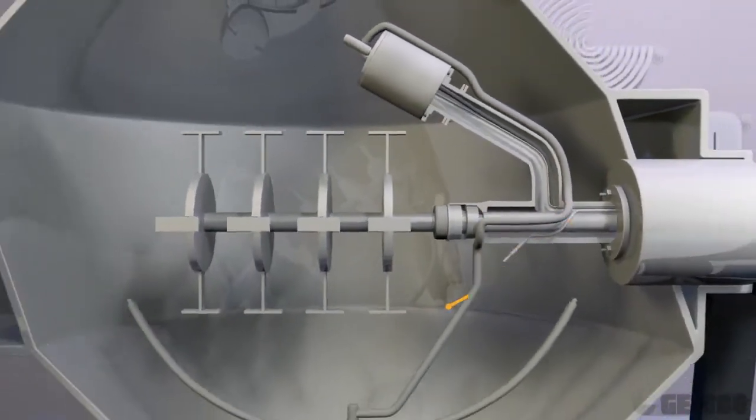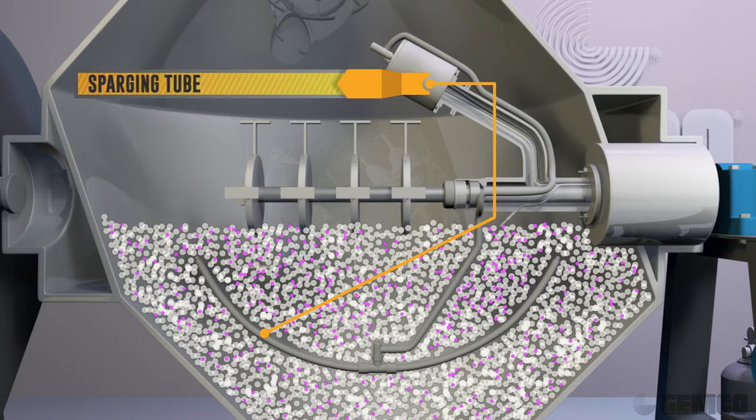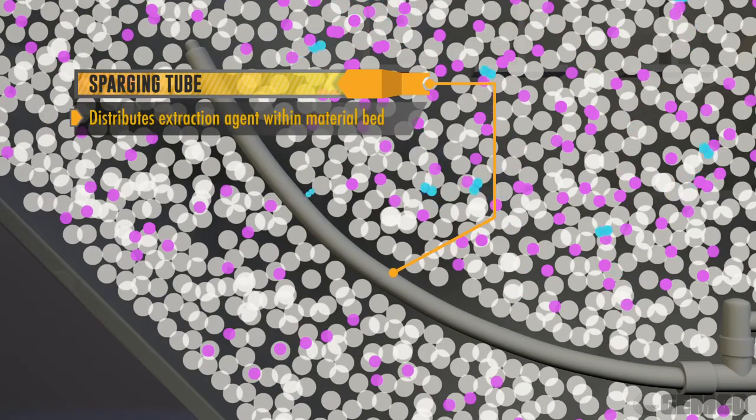Let's revisit the first major issue with a typical heated tray system, uneven drying. JEMCO's gas purge system features the only tumble dryers in the industry that provide sparging. A perforated tube is positioned underneath the bed of material and distributes an even flow of gas, such as nitrogen.